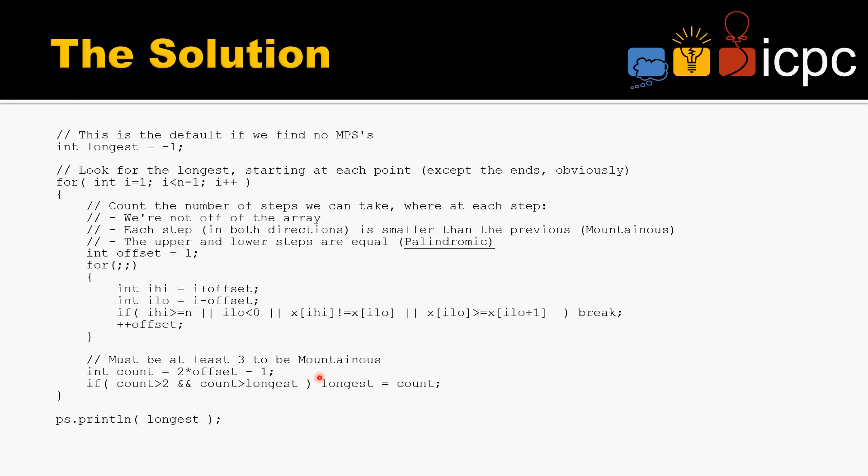...3, 2, 1, and then one further - it would go 1, 2, 3 before it fails. 2 times 3 minus 1 is 5, and that is the correct length.